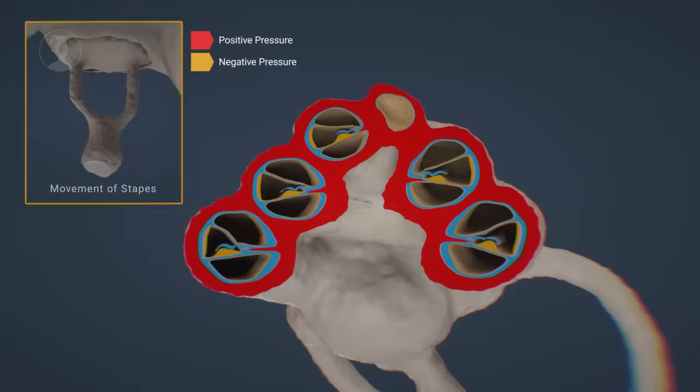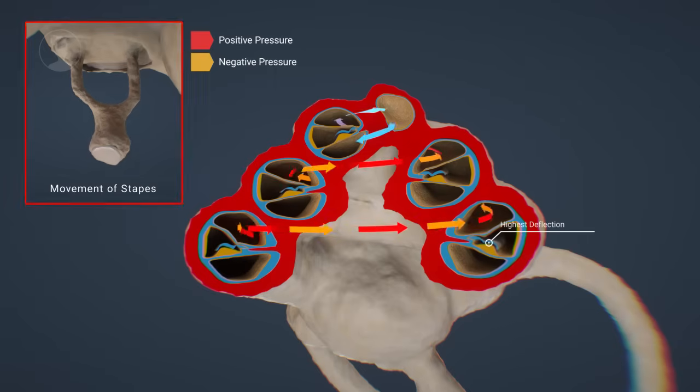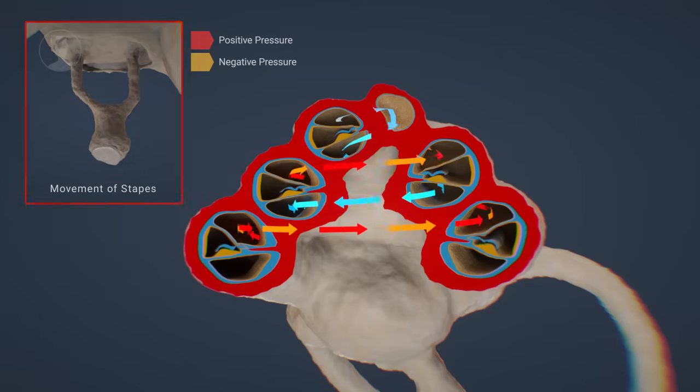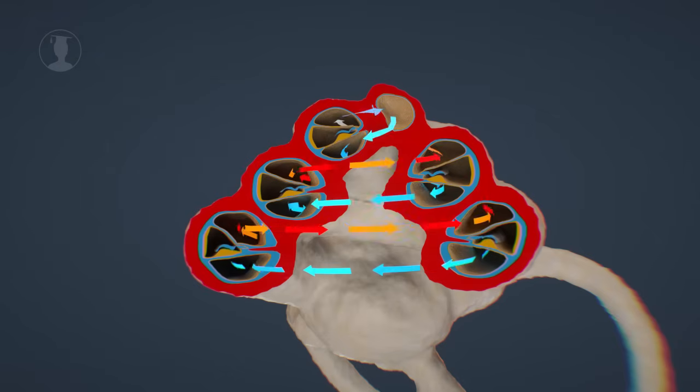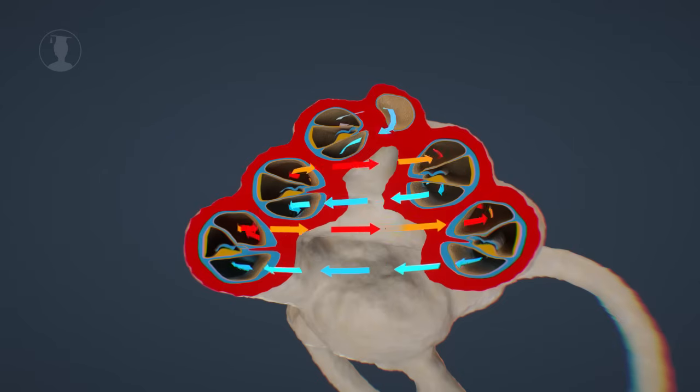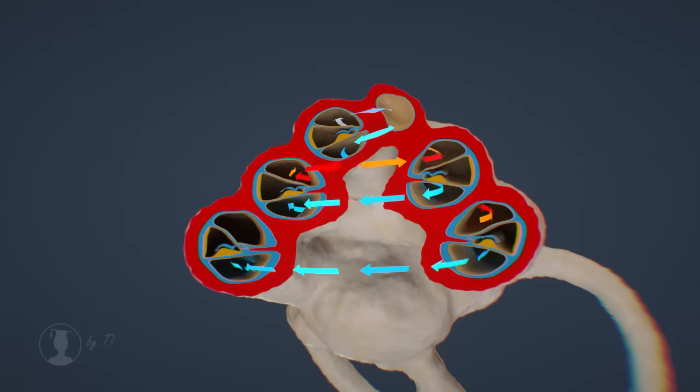As soon as the stapes triggers a pressure wave in the scala vestibuli, the Reissner membrane is pushed in the direction of the scala media, causing the basilar membrane to move. However, the basilar membrane vibrates very strongly at a certain position of the cochlea because resonance occurs. After this high deflection of the basilar membrane, the wave quickly loses its energy, which means that there are no more strong movements.